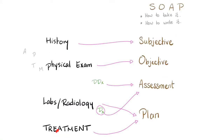Here is the old way, and here is the new way — or here is how the notes are structured in the exam: History, physical exam, labs and radiology, and then treatment. We can also call this the SOAP note. S is for subjective, O is for objective, A is assessment, and P is the plan.